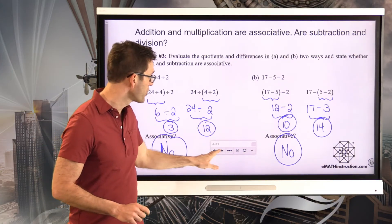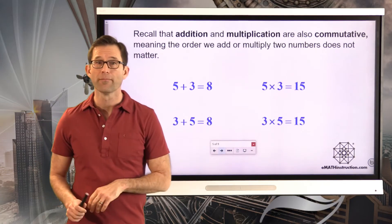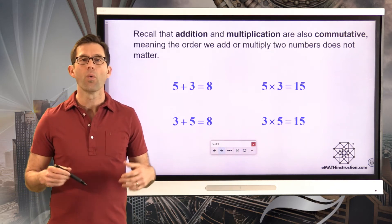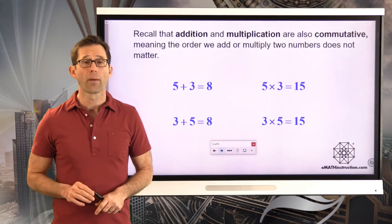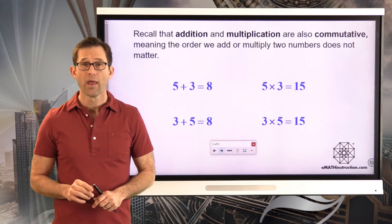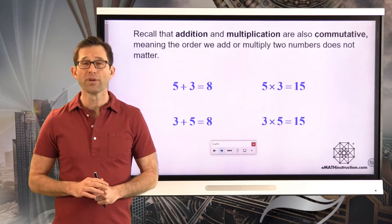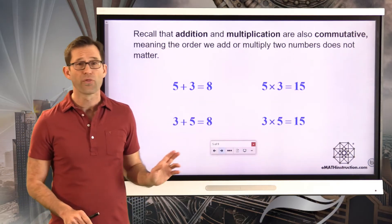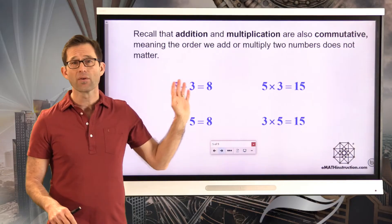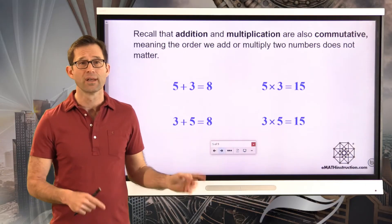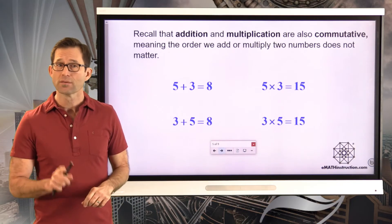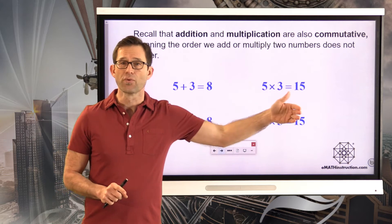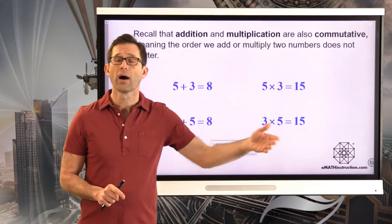Let's look at another extremely important property. Recall that addition and multiplication are also what are called commutative. The commutative property only deals with two numbers and the operation, and basically it says it doesn't matter which number comes first. For example, 5 plus 3 is 8, and 3 plus 5 is 8 — it doesn't matter. If I have $5 and $3, I have $8 regardless of which came first. Likewise, multiplication is also commutative: 5 times 3 is 15 and 3 times 5 is 15.